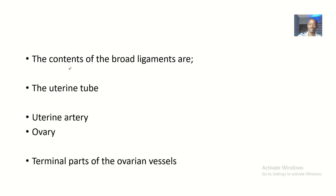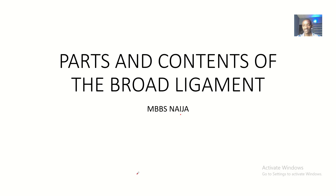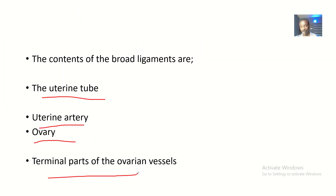Now talking about the contents of the broad ligaments: these include the uterine tube, uterine artery, ovary, and terminal parts of ovarian vessels. These are the normal contents, while the other video covered the vestigial structures that can be found in the broad ligaments.